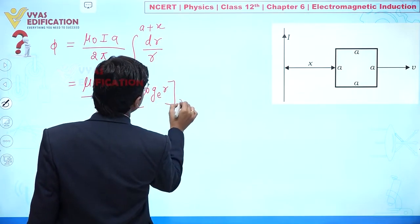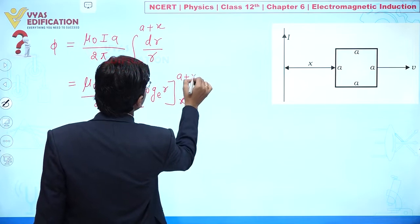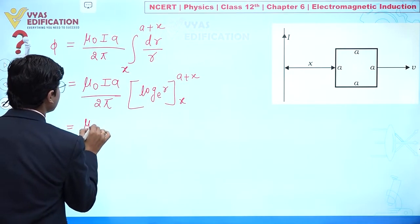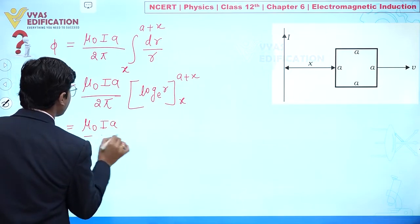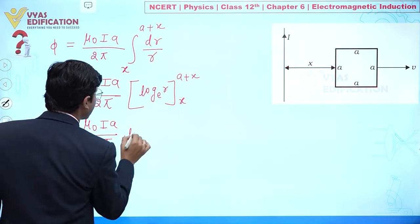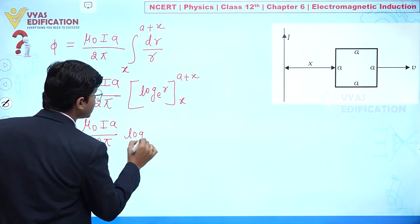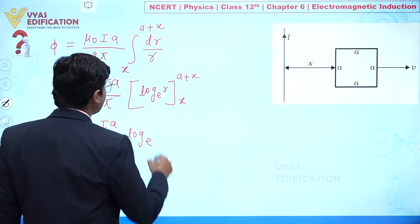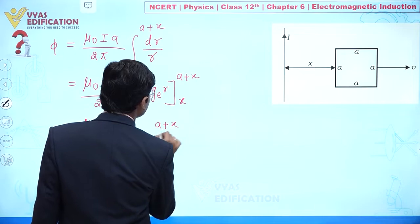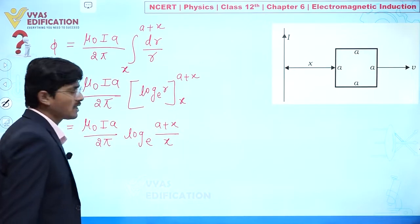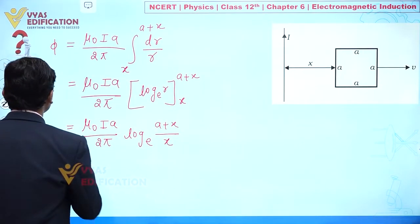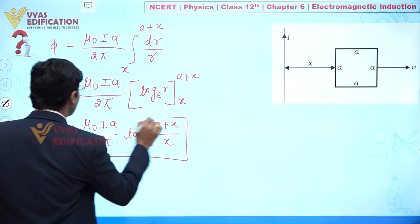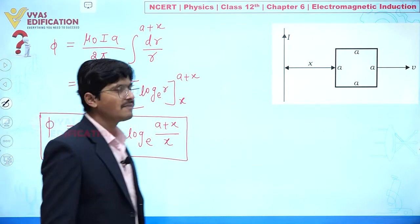Applying the limits, the value of flux is φ = (μ₀Ia / 2π) · ln((a + x) / x). This is the total magnetic flux through the square loop due to the long straight wire.